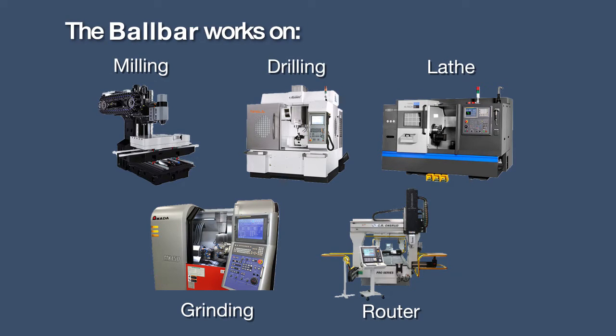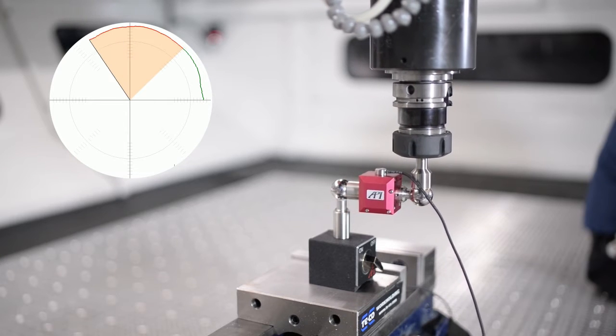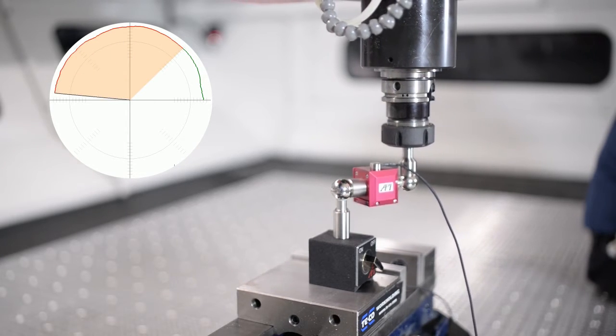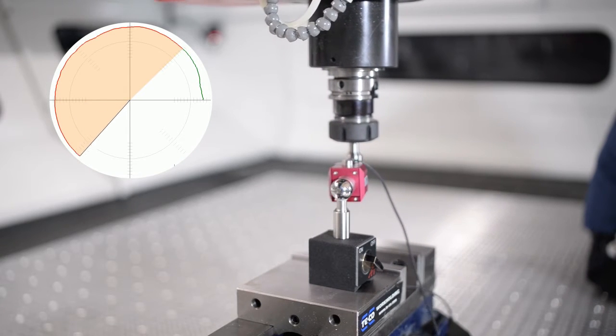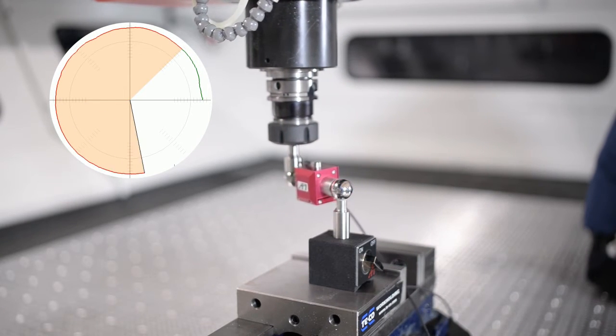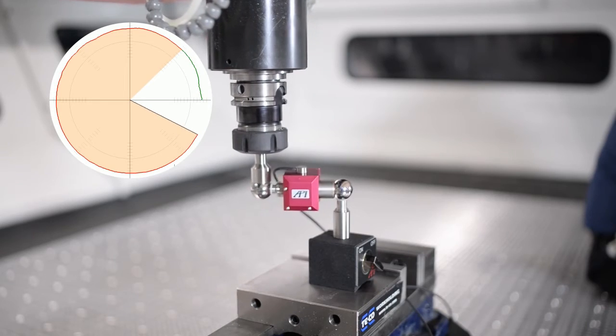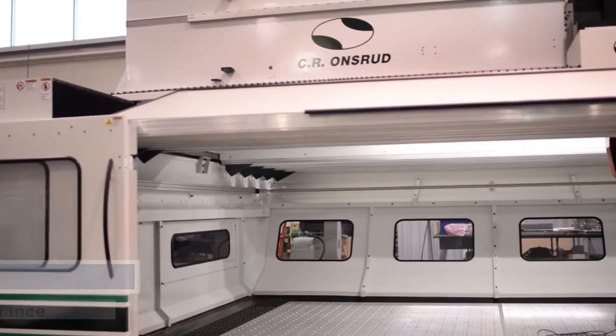It works on milling, drilling, lathe, grinding, and router machines. By tracing the machine's path in a circular pattern, the ball bar measures radial and circular deviation, servo mismatch, backlash, hysteresis, and more.